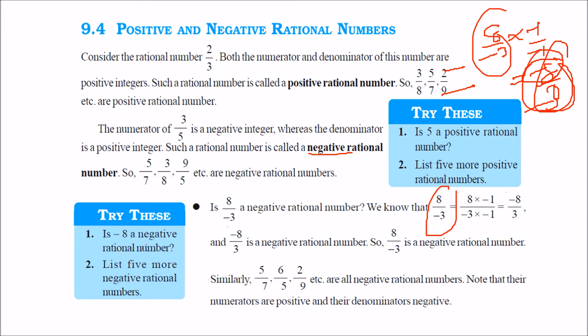Is minus 8 a negative rational number? Yes, minus 8 means minus 8 by 1. The numerator is negative, denominator is positive, so this is a negative rational number.